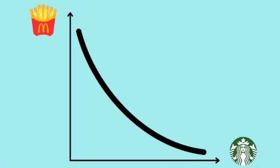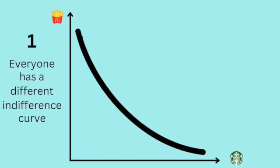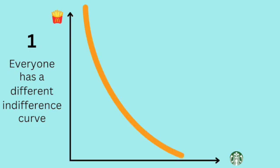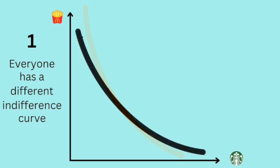We now have our indifference curve, and there are five important things we need to note. Firstly, everyone has a different indifference curve. This one here represents and is built upon the preferences of our example consumer. Your curve will undoubtedly be different and could be like this or like this. How it looks will depend on your natural preference between McDonald's and Starbucks.